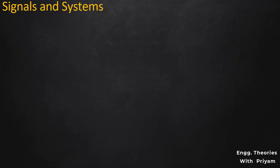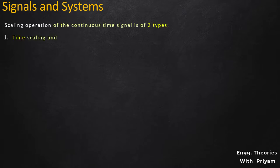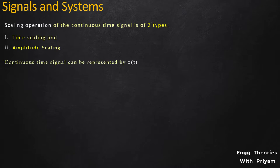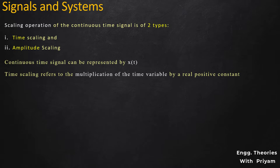In this lecture on signals and systems, we are going to see the scaling operation of the continuous time signal. As seen earlier, the scaling operation is of two types: time scaling and amplitude scaling. In this lecture, we will understand the time scaling operation. A continuous time signal is a function of independent variable T, defined for all values of T, represented as X(T). The time scaling operation refers to the multiplication of the time variable T in the signal X(T) by a real positive constant alpha, or replacing T by alpha*T.